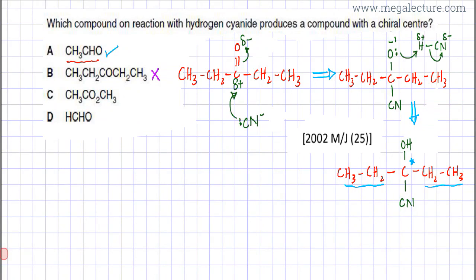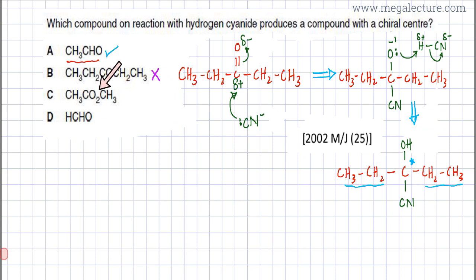Option C is incorrect because it is an ester, not a carbonyl compound. There is no C=O aldehyde or ketone group — there is instead an ester group — and esters do not react with HCN. So option C will not have a reaction with HCN in the first place.